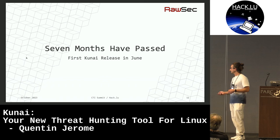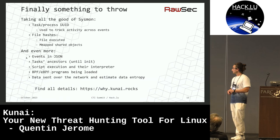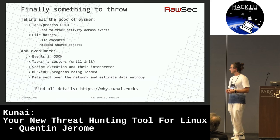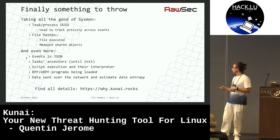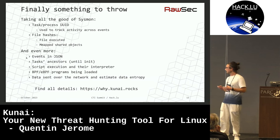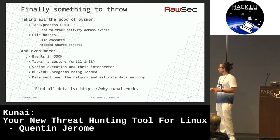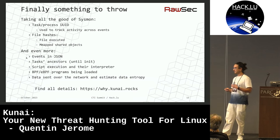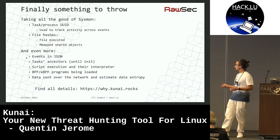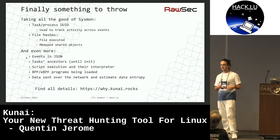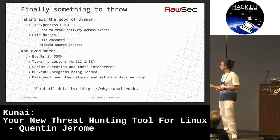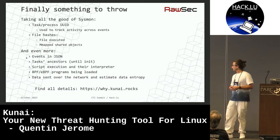So, seven months have passed — this is time for the first release, with my objectives almost fulfilled. I took all what I judged good in Sysmon: the UID tagging on events that allows you to track the activity of a given process from its birth until its termination. Also, all the information about a file being executed, a file being mapped in memory — most especially the shared objects. And even more.